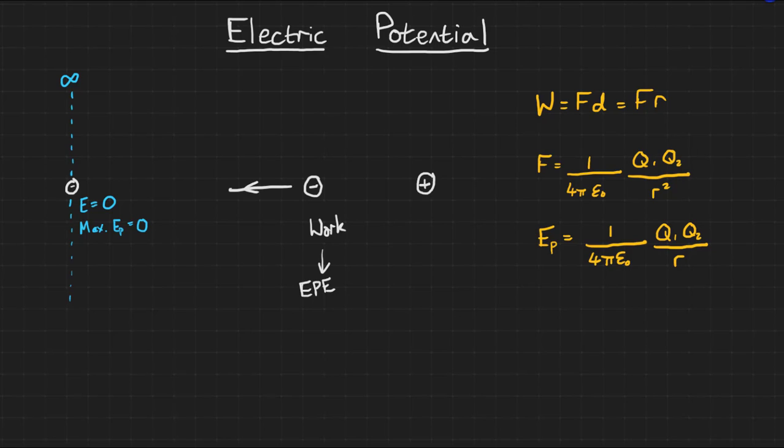Similarly, electric potential, V, is the work done per unit charge to move a positive test charge from infinity to that point. For a radial field, this gives us an electrical potential, V, equal to 1 over 4 pi epsilon 0, multiplied by q, divided by r.